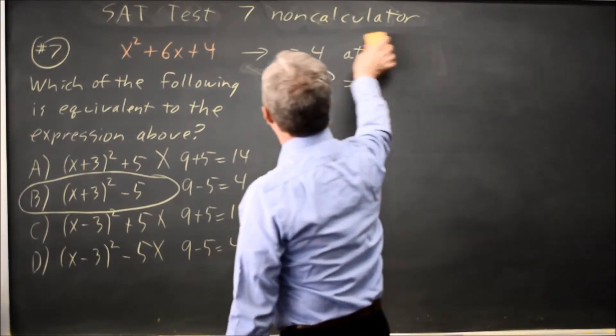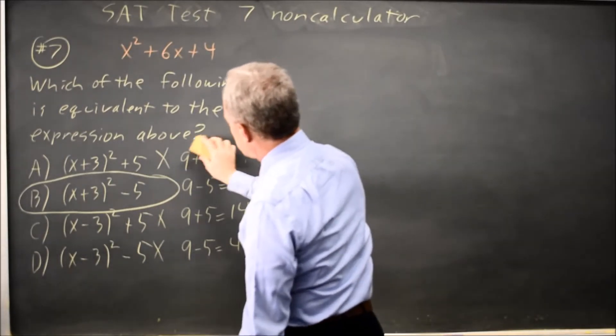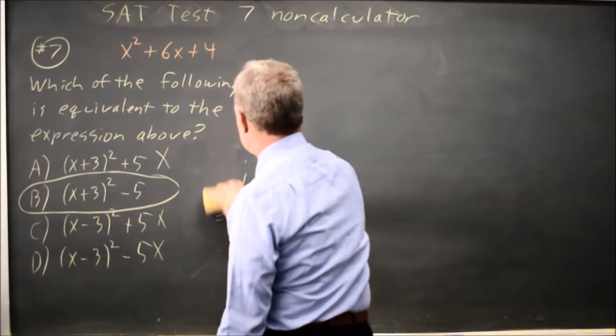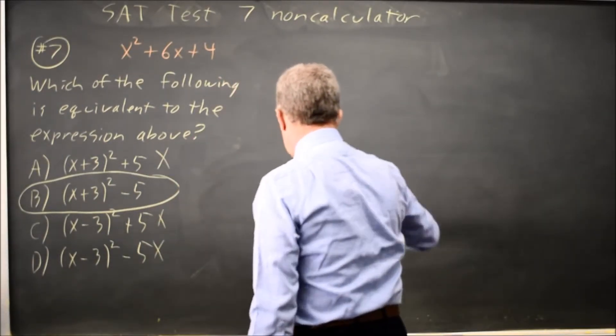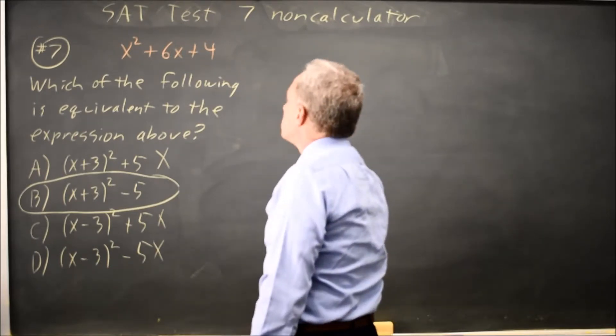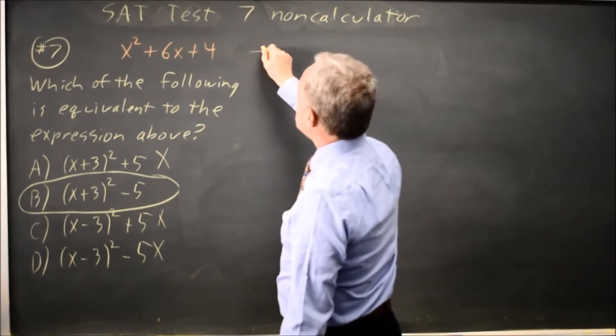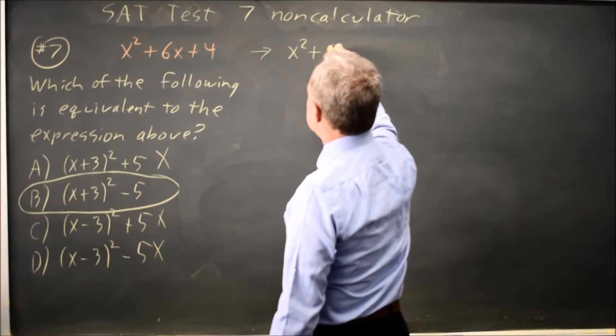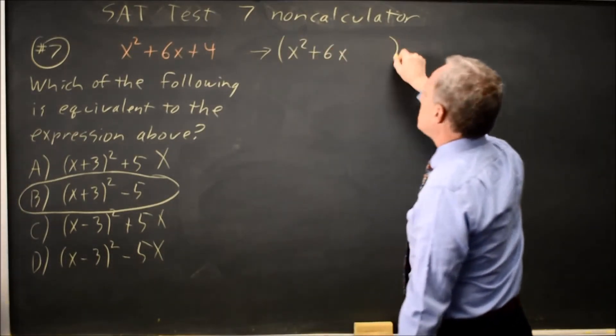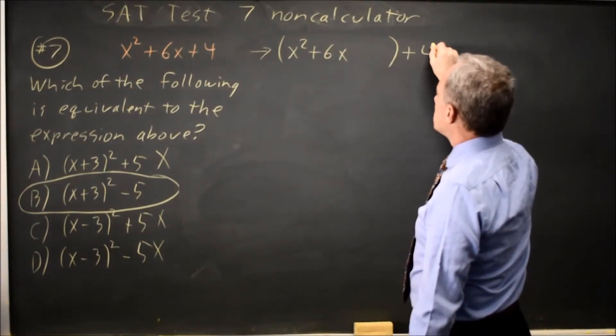Let's try completing the square, though, because that's the math that College Board wanted us to do. And it's good to review the math. Completing the square, I can take x squared plus 6x. Leave a space for completing the square plus 4.